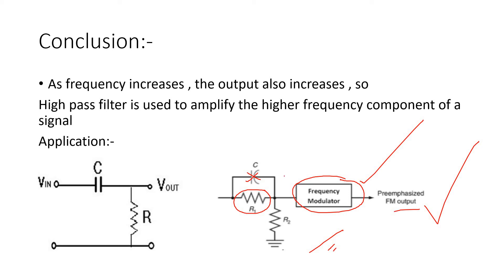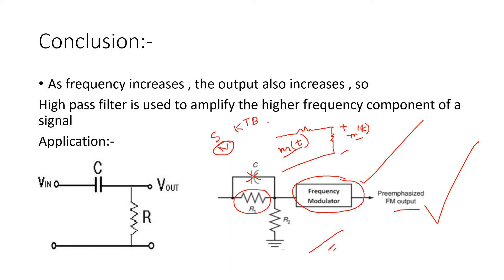At low frequency, the capacitor is open circuit and the resistor forms a voltage divider, so the signal power of m'(t) will be slightly less than m(t). However, this is not a great issue because at low frequency the noise power is also very less (k·T·B), so even if signal power decreases slightly, the signal-to-noise ratio will remain at a standard value for proper reliable communication.